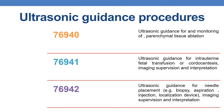Coming to more ultrasonic guidance procedures. The next CPT is 76940, which deals with ultrasonic guidance for and monitoring of parenchymal tissue ablation. Next is 76941, which deals with ultrasonic guidance for intrauterine fetal transfusion or cordocentesis, imaging, supervision, and interpretation.